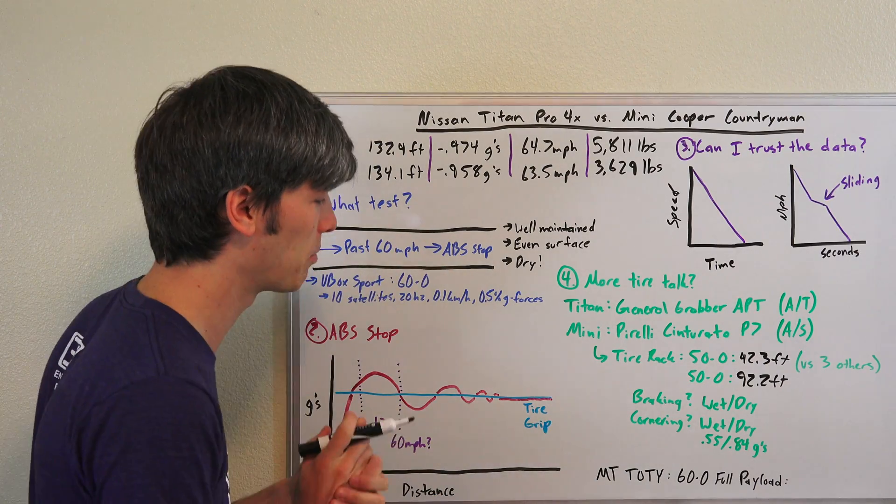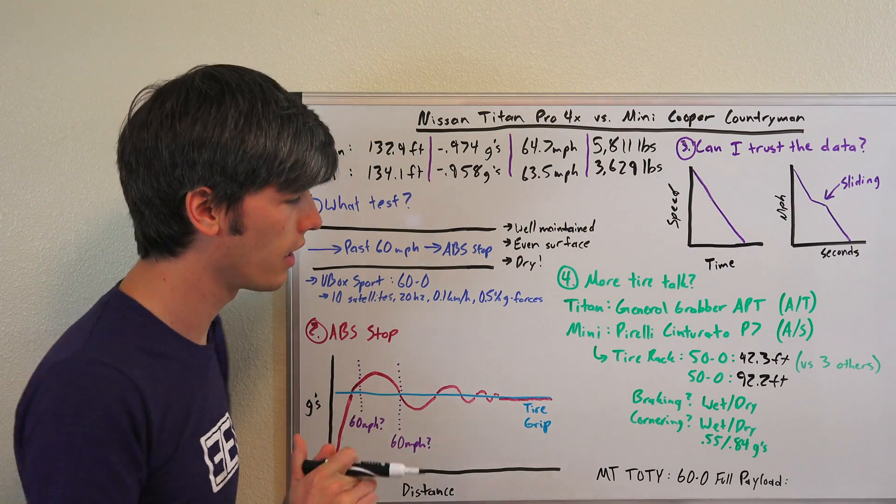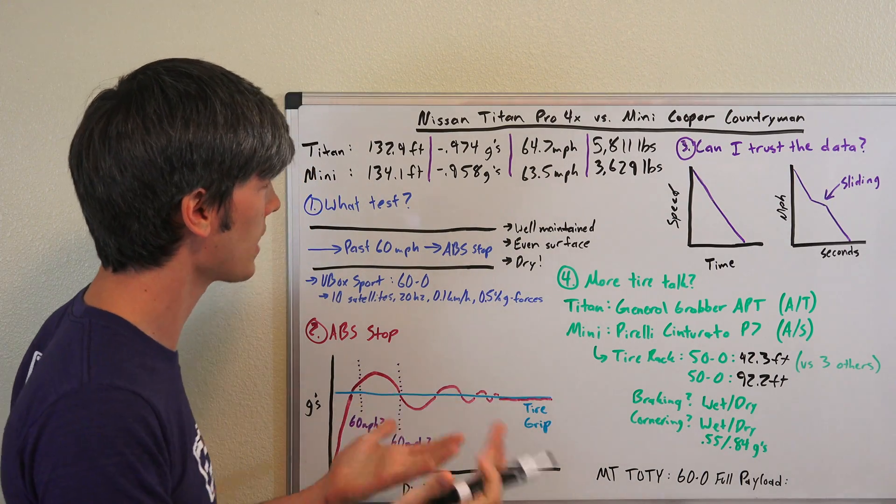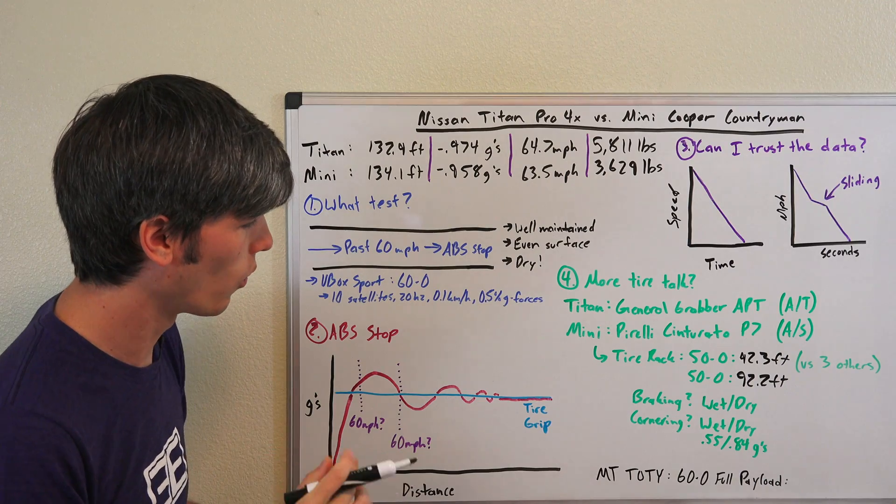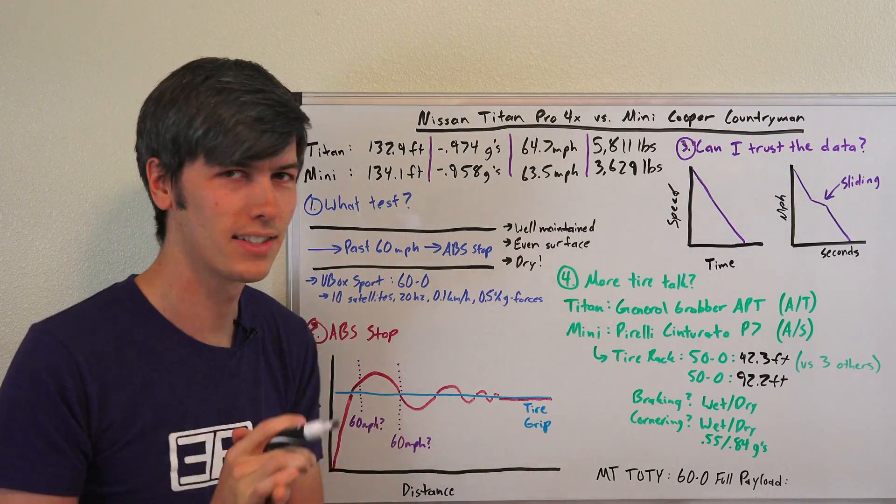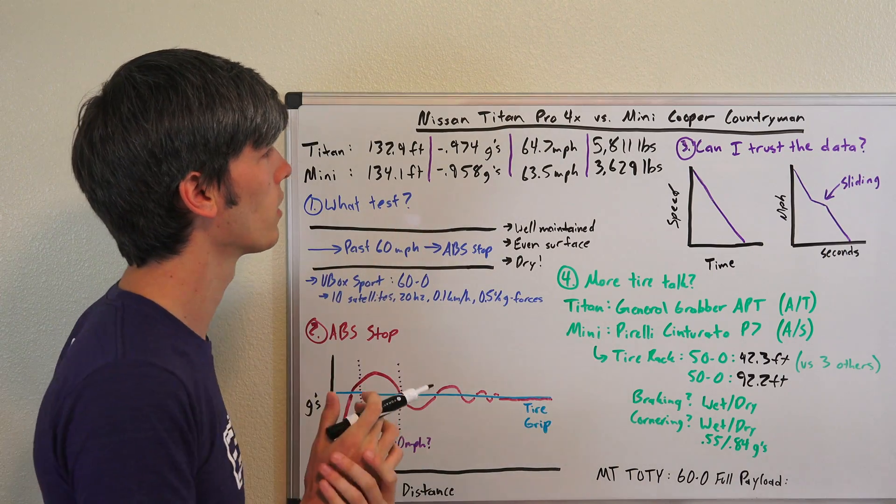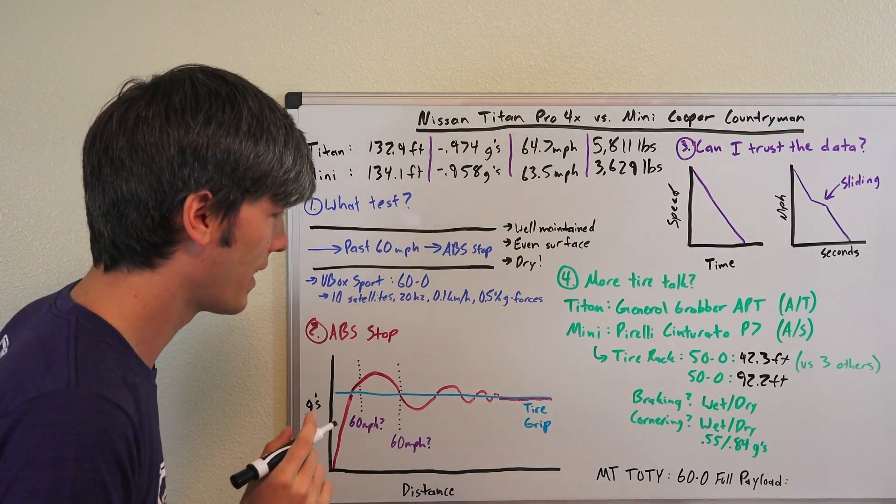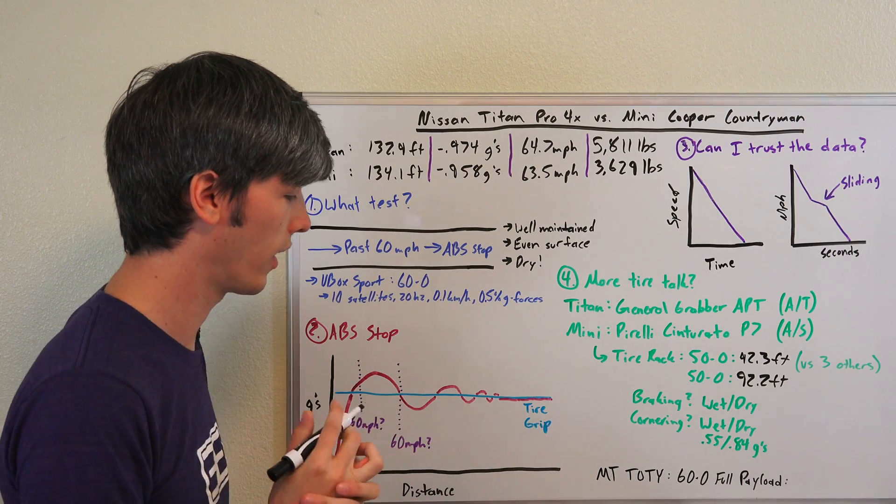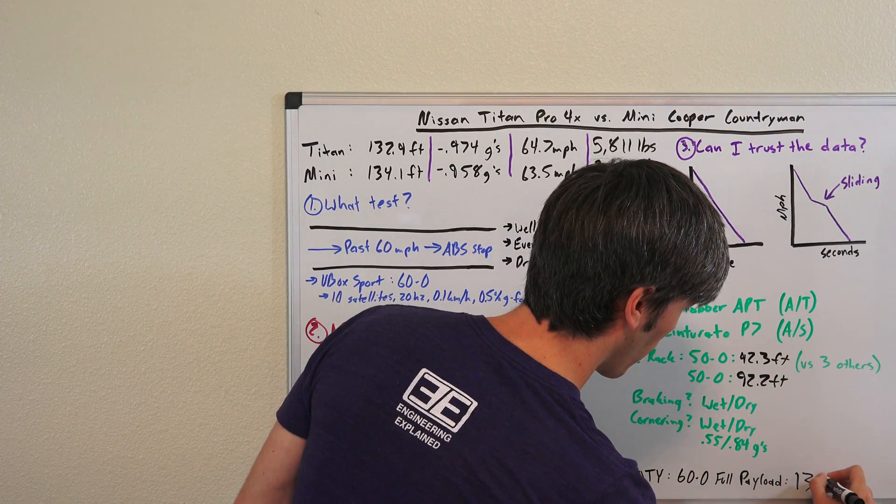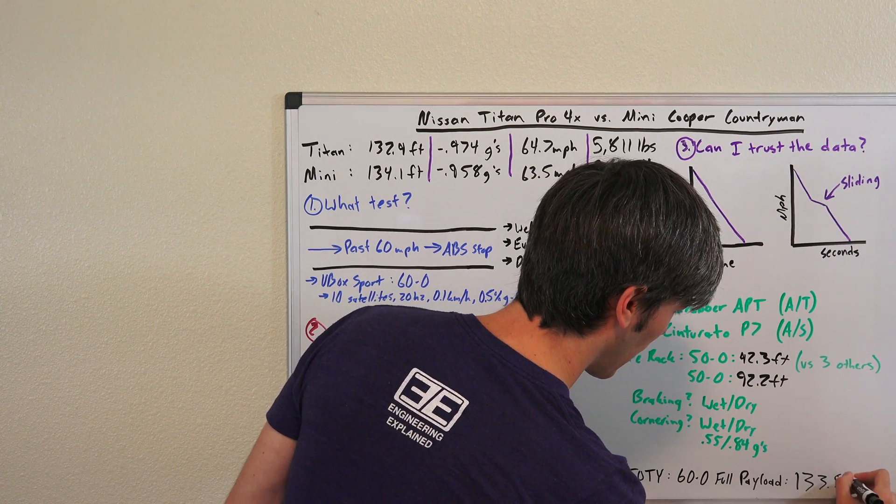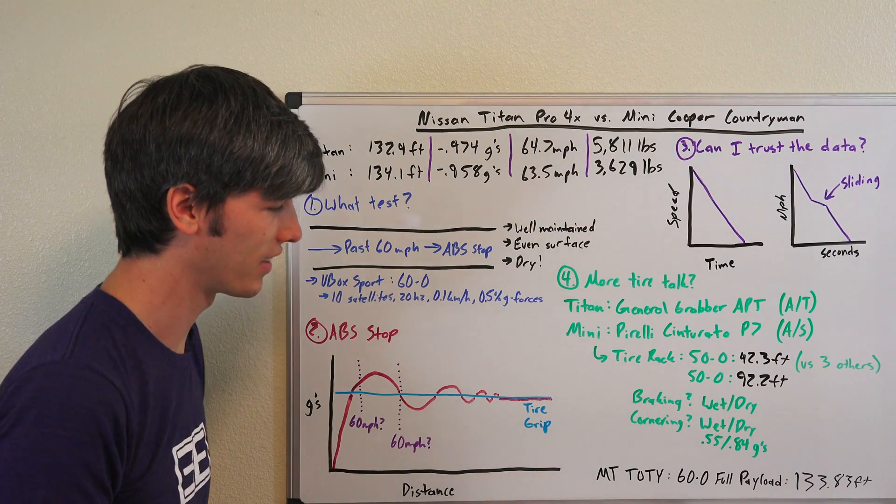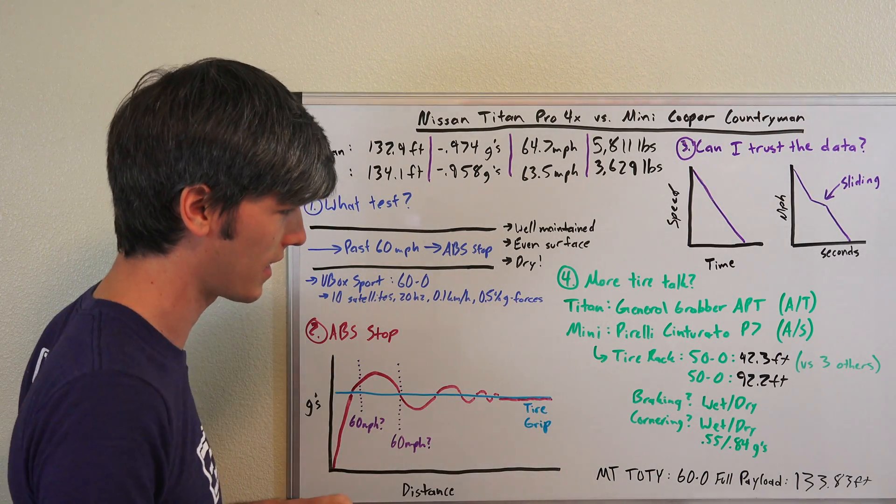One final data point. Motor Trend Truck of the Year 2017 is the Nissan Titan. One of their tests is a 60 to 0 with full payload, so whatever the rated payload for this Nissan Titan is, something like 1500 pounds or so. They did that in 133.83 feet, a super impressive stopping distance. It was the best of the trucks they tested.